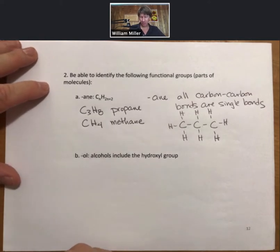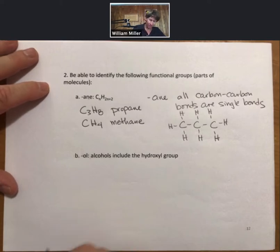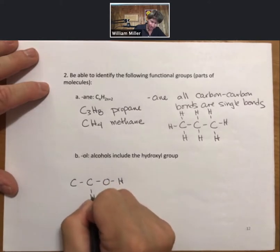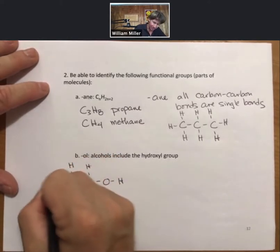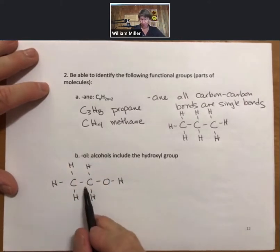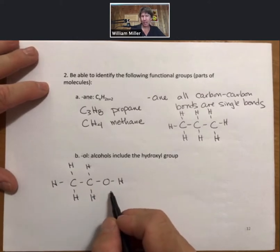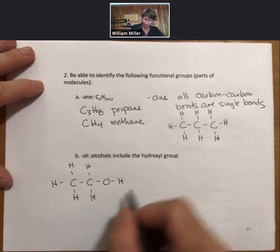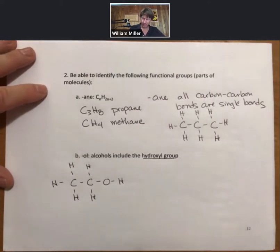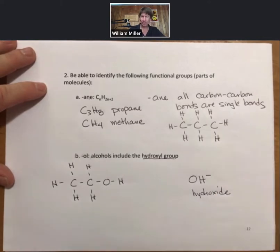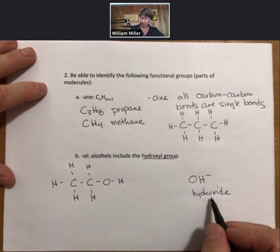The second functional group it will be useful to know are the alcohols. Alcohols include the hydroxyl group, an alcohol group in ethanol. Ethanol being the alcohol in beer, wine, and other alcoholic beverages. Eth will mean two carbons. Eth is OH. Now, I wanted to draw a distinction here between the OH group, which is called the hydroxyl group, and the hydroxide group. It's very important to be able to tell these two apart. The hydroxide group is an ion.